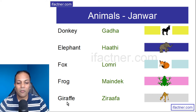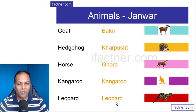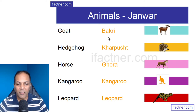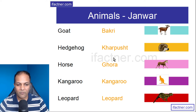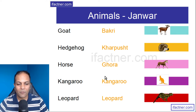Giraffe is Ziraafa. Goat is Bakri. Hedgehog is Kharpusht. Horse is Ghoda.